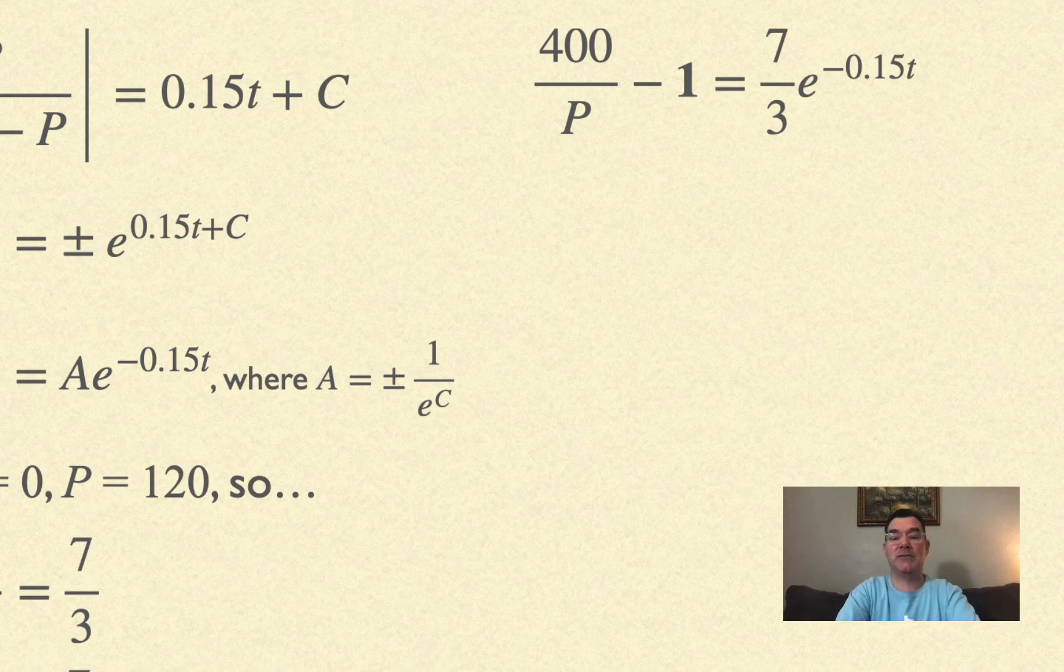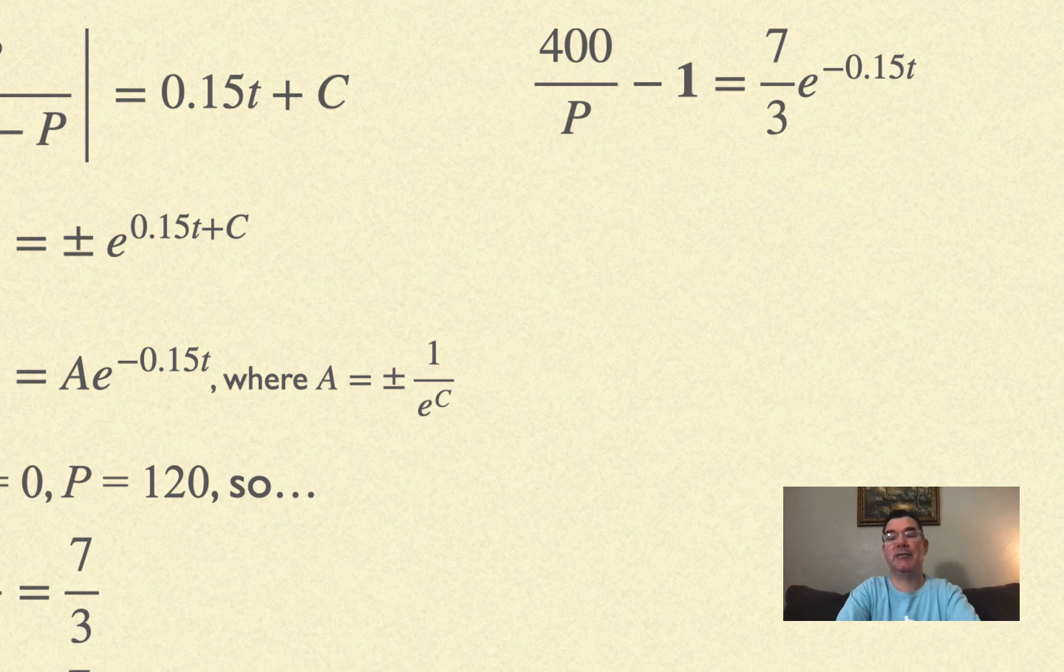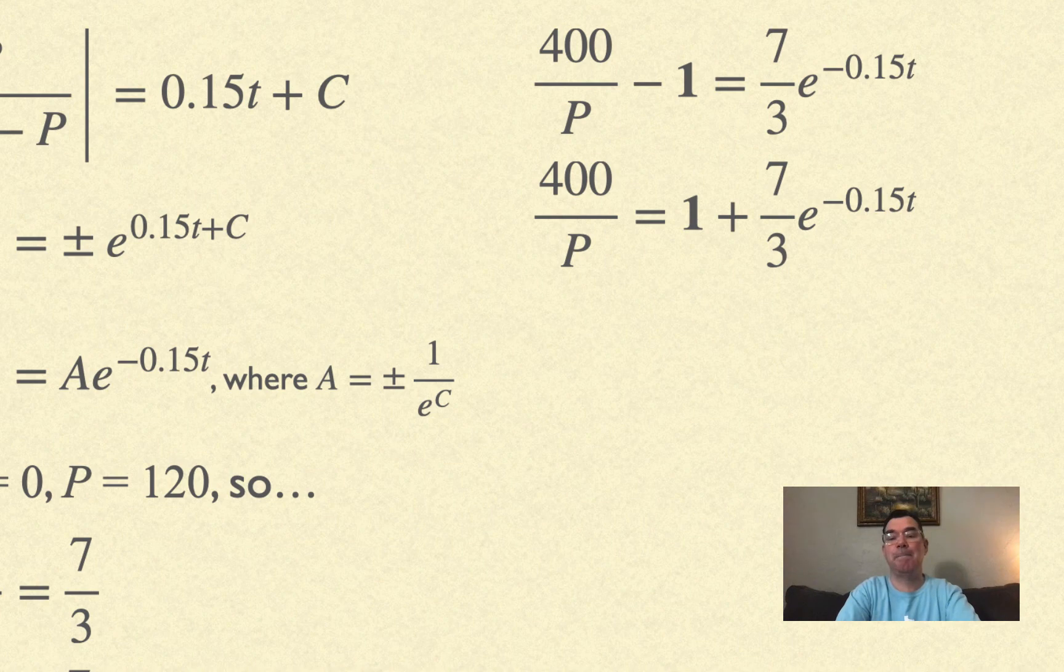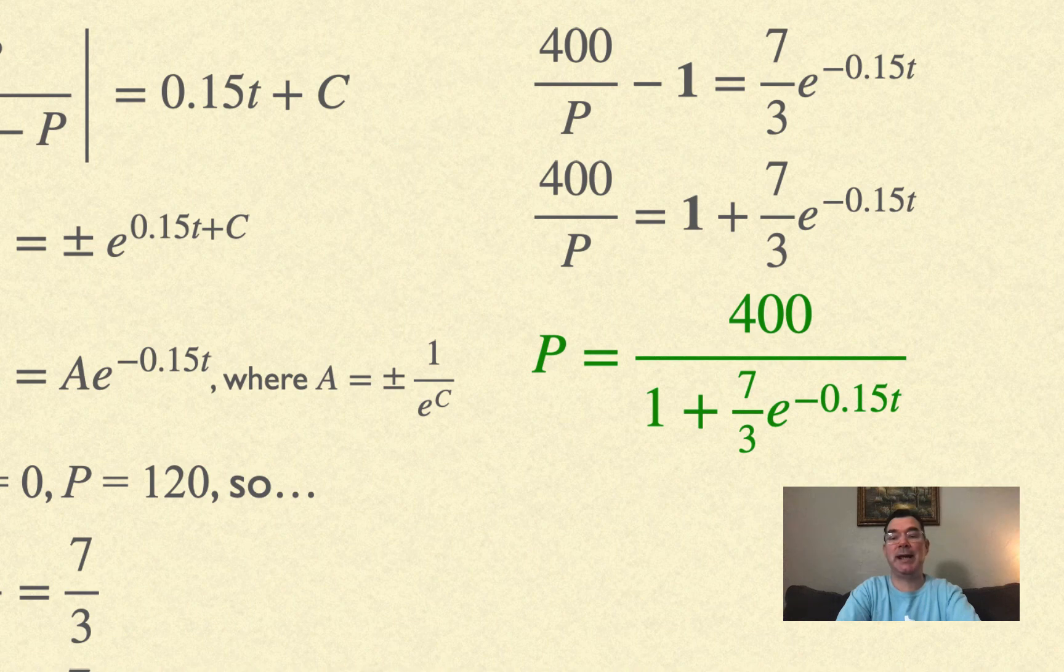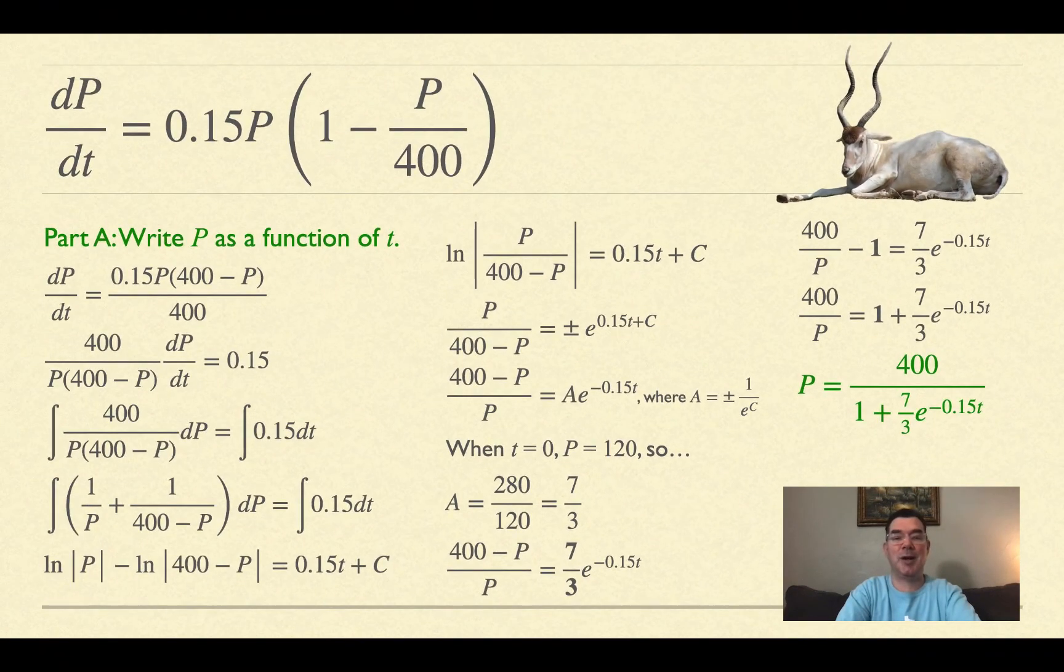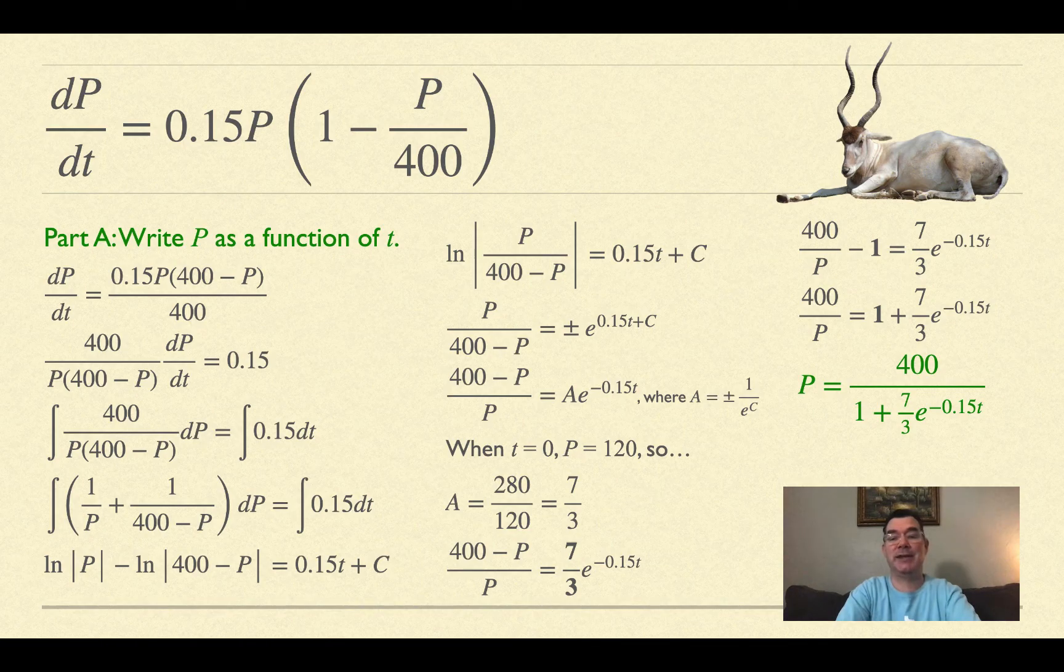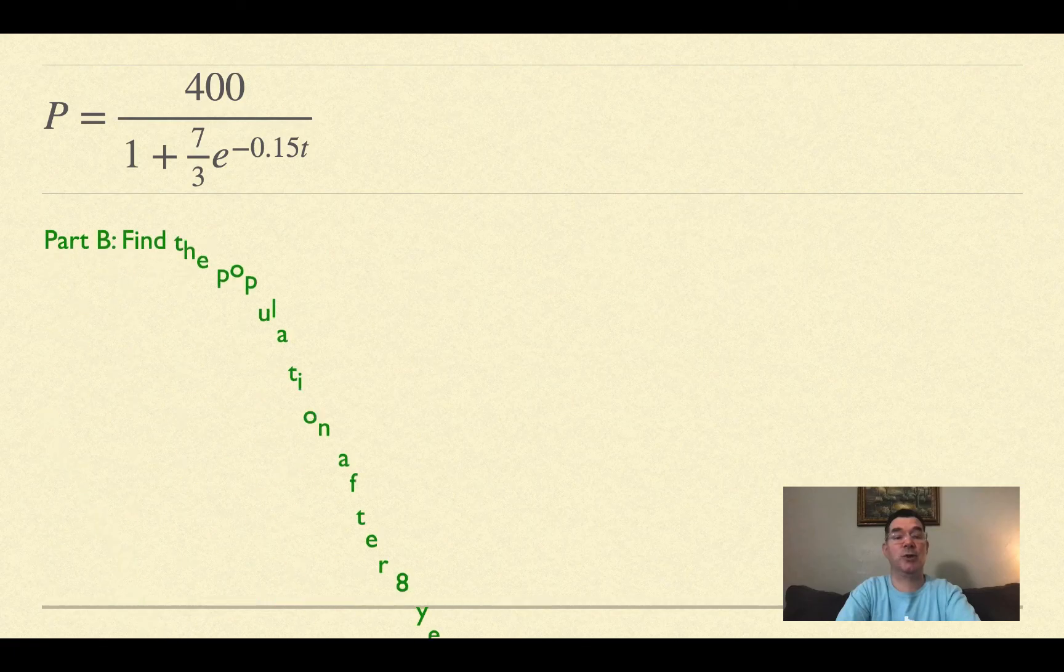I rewrote the left as 400/P - 1, which equals (7/3)e^(-0.15t). Moving the 1 over and solving for P, I get P = 400/(1 + (7/3)e^(-0.15t)). Now I can use this to solve the rest of the questions.